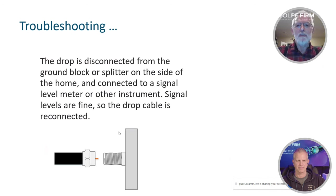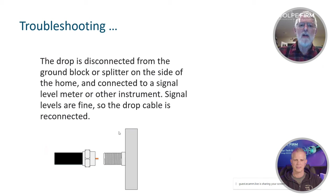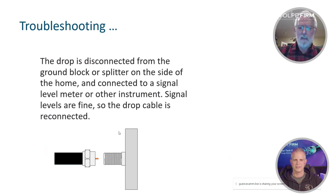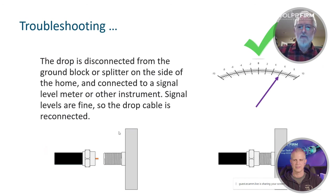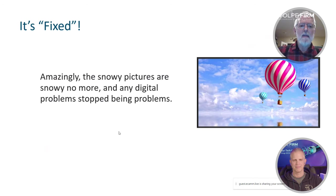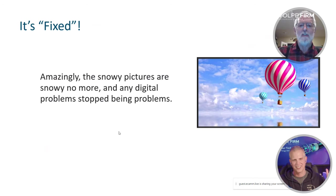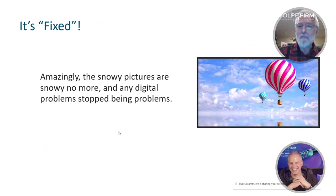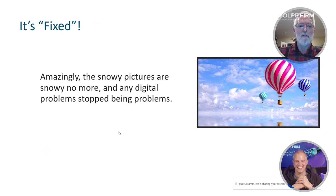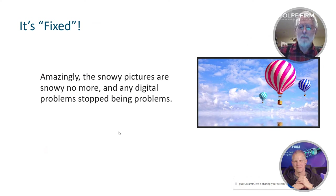Here's the troubleshooting process: you go to the tap or the side of the house and disconnect the connector — the drop cable from the ground block or splitter or the tap spigot at the pole or pedestal — hook it up to a signal level meter or some other test instrument. You look and say, signal levels are okay. So you reconnect the drop cable and amazingly, everything is fixed. No problem found. Snowy pictures are back to good quality and any digital problems just stopped being problems. So what on earth is going on here?